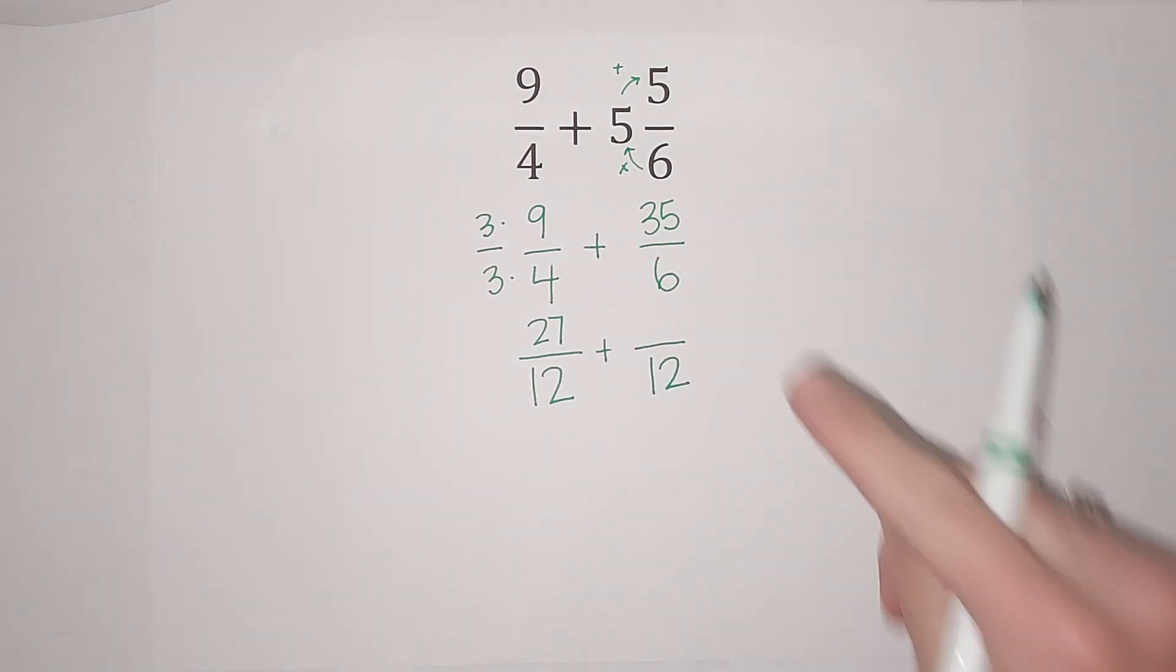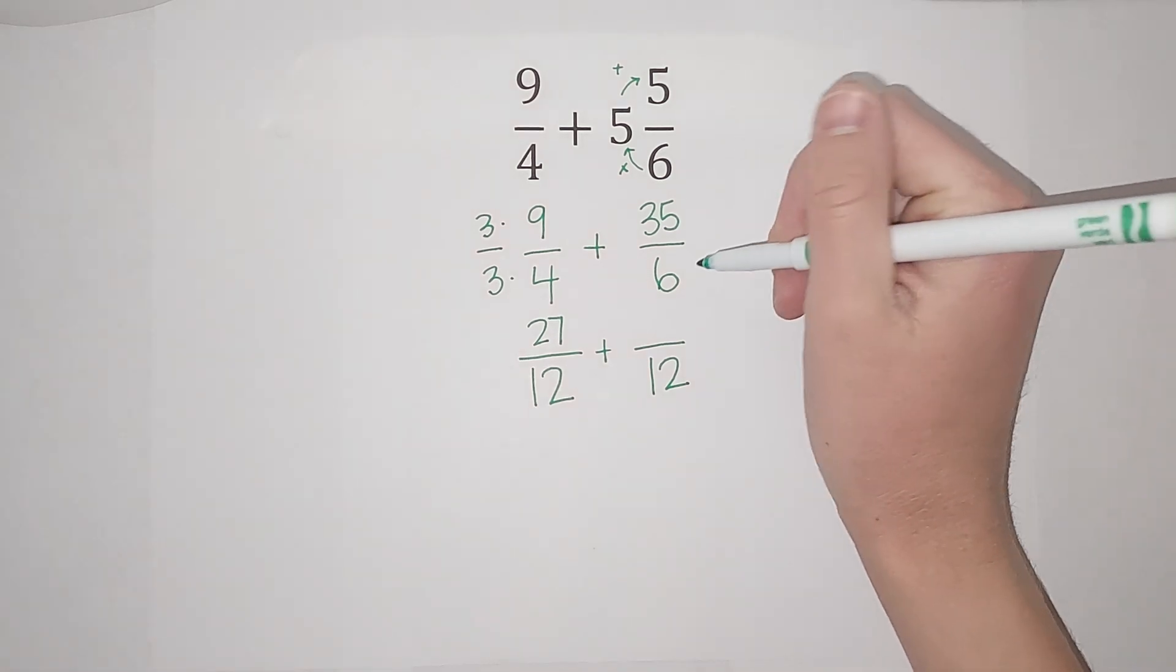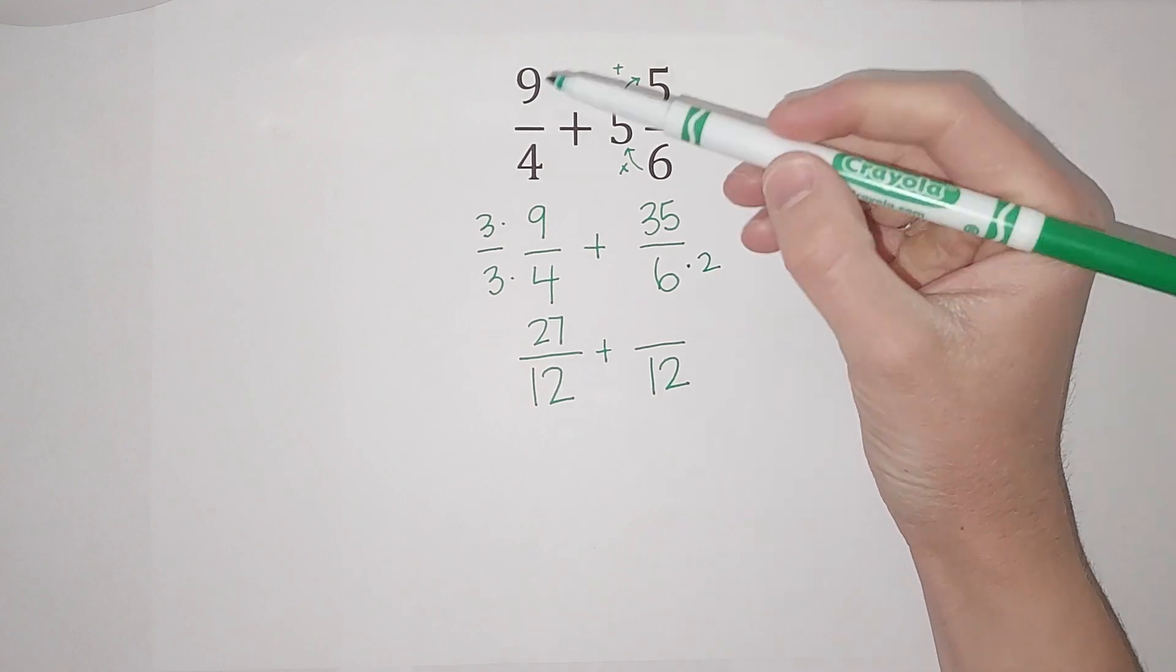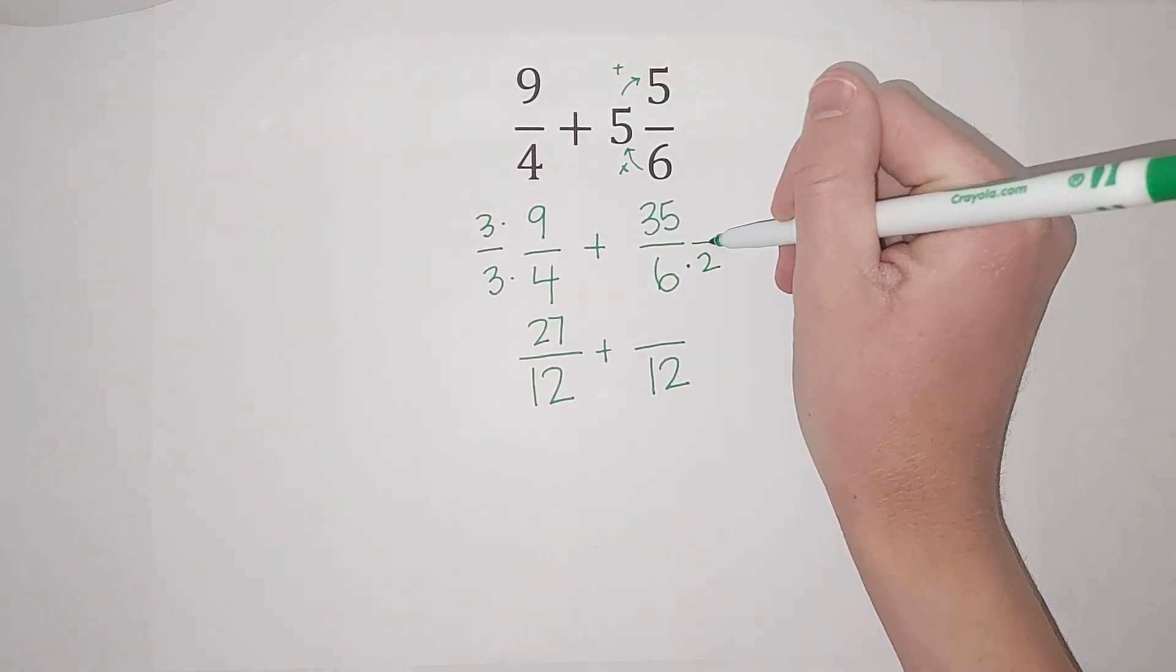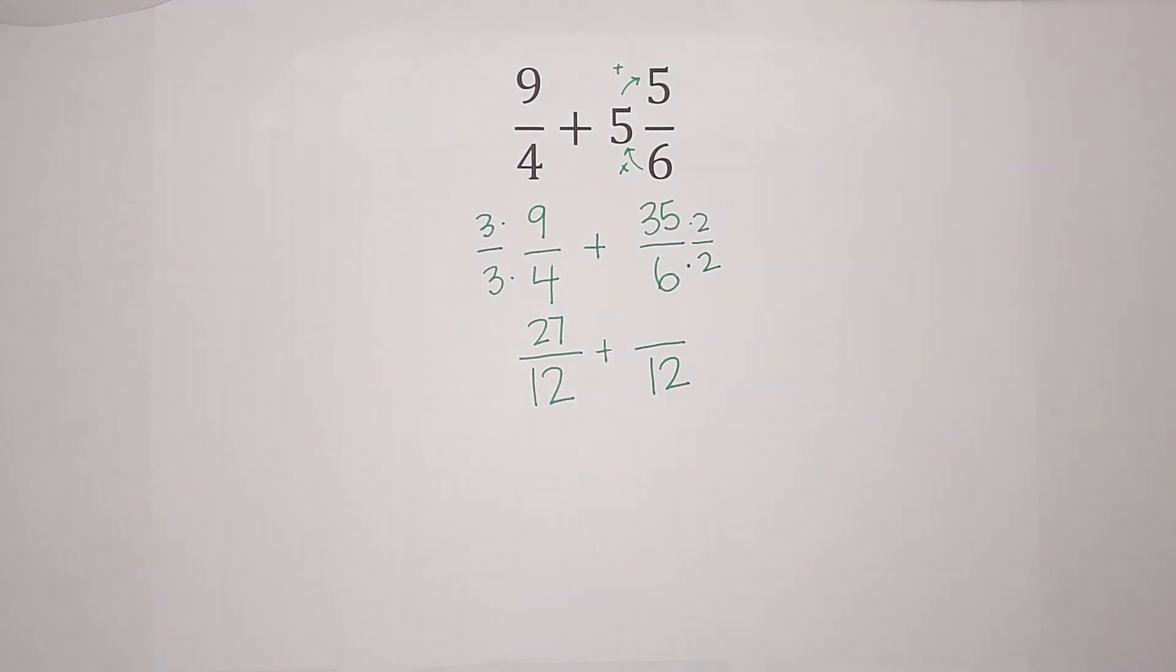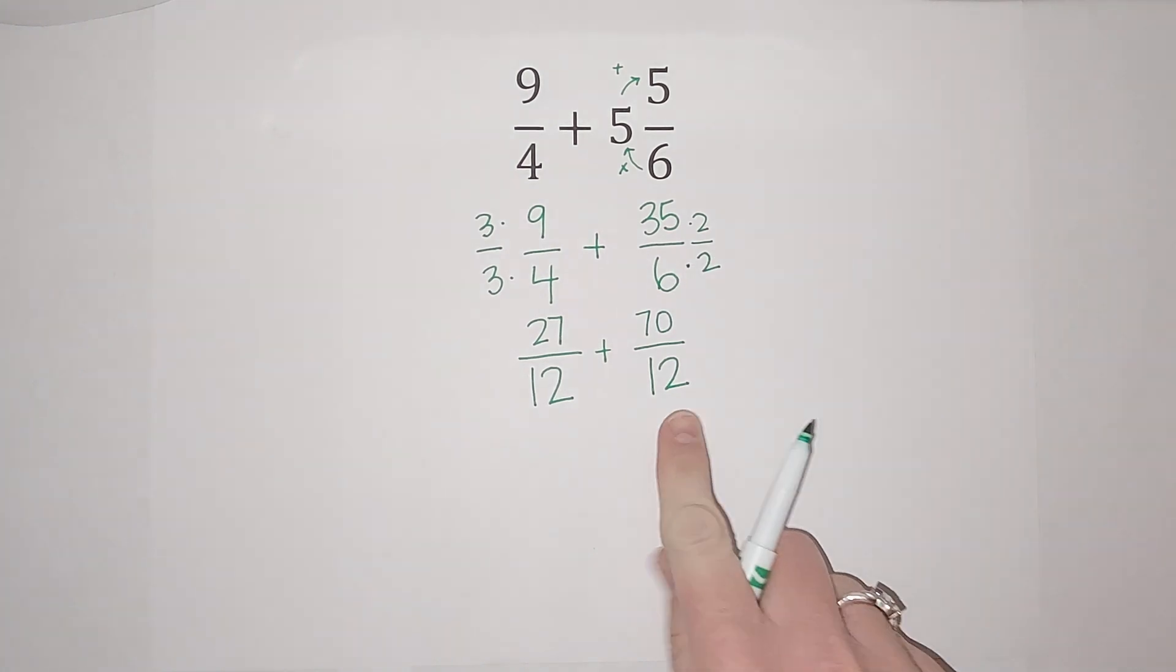All right, let's go ahead and change our other fraction. What do I need to do to 6 to get it to be a 12? Well, I'm going to multiply by 2. And just like over here, I need to multiply by 2 over 2. All right, so 35 times 2 gives me 70. And 6 times 2 gives me that 12.